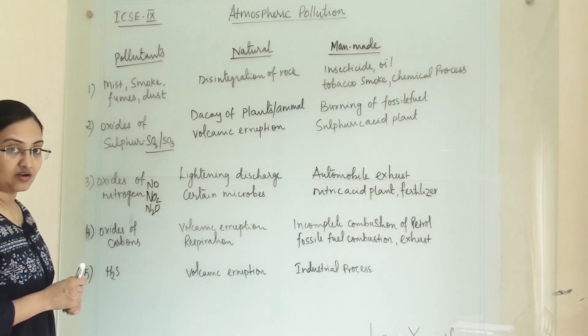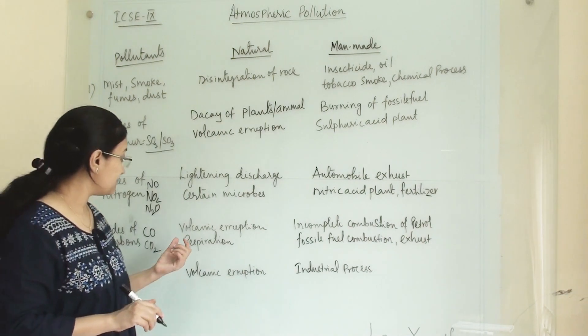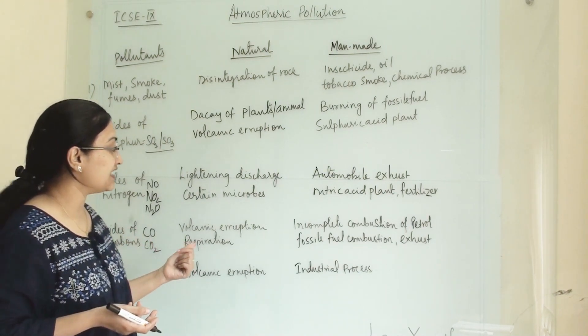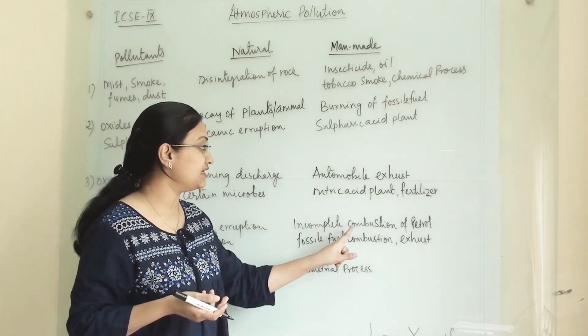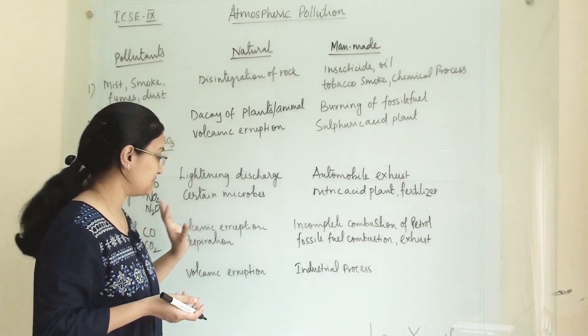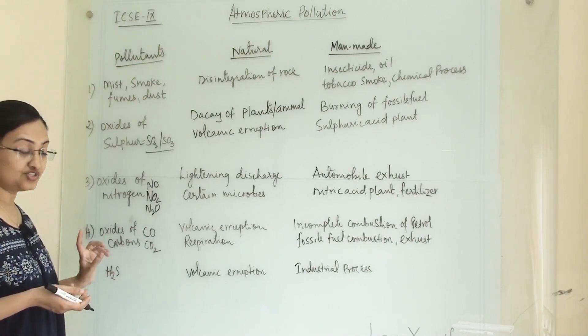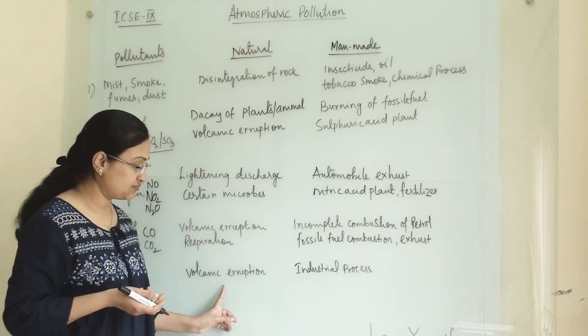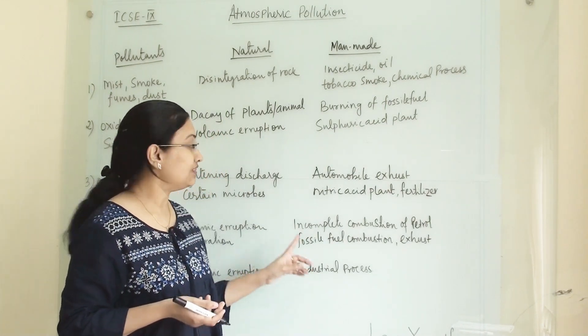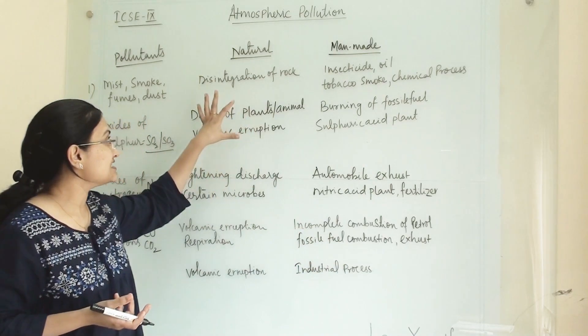Then oxides of carbon. Under oxides of carbon, carbon monoxide and carbon dioxide are the major oxides. Natural sources like volcanic eruption and respiration are responsible for their amount in the atmosphere. Whereas under manmade activity, incomplete combustion of petrol, fossil fuel combustion, and exhaust are responsible for precipitation of carbon monoxide and carbon dioxide. H2S, hydrogen sulfide gas, is generating through volcanic eruption under natural activity, and manmade activity like industrial processes. All these pollutants are coming into the atmosphere through manmade activity as well as natural sources.